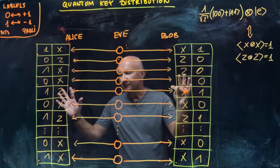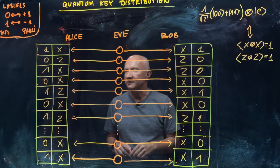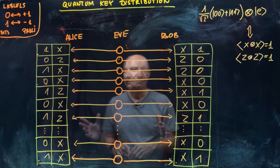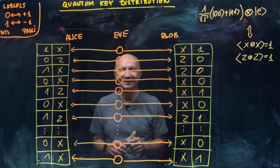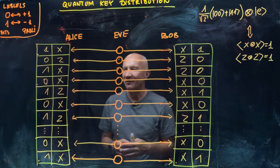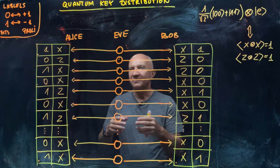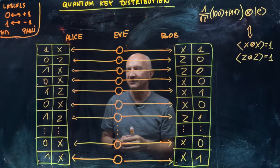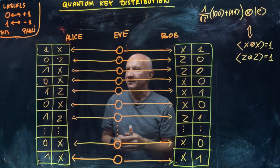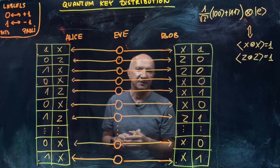Now we have all ingredients in place to talk about quantum key distribution. Let me tell you how Alice and Bob, in two distant locations, can use measurements on qubits that they receive from some external source, and subsequent public communication, to establish a secure cryptographic key.